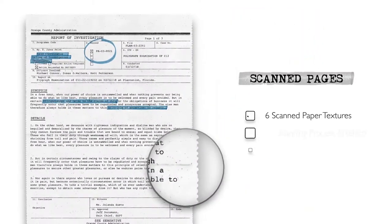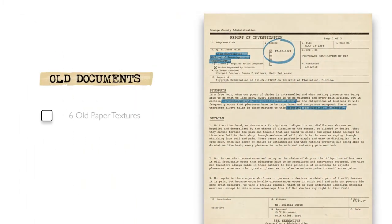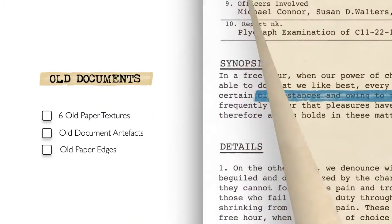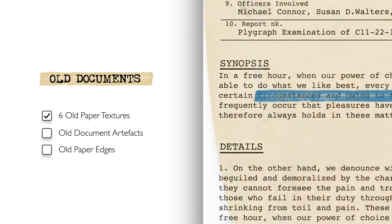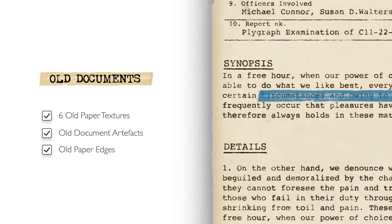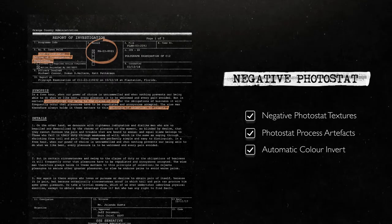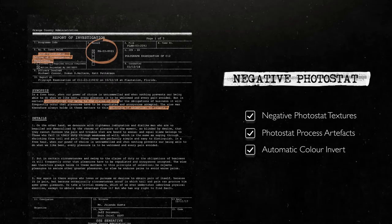You can easily add some realism and grit by selecting the Scanned Pages visual style. Old Document style will apply old paper textures, degrade text quality, and even roughen page edges. And if you need to take your viewer all the way to the early 1900s, then Negative Photostat is your style for the job.